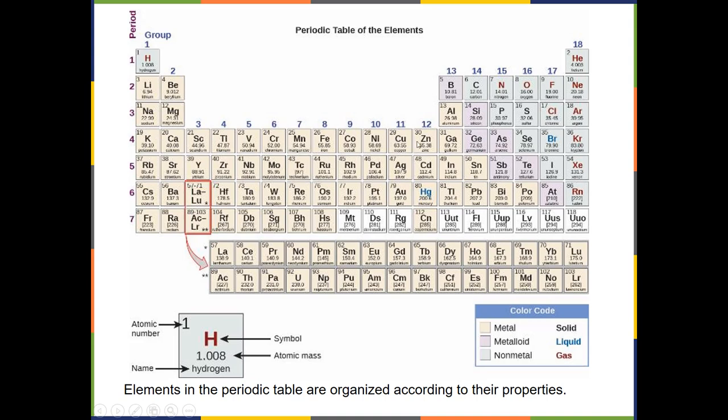And notice, across each period, so each row is called a period, we have increasing atomic numbers.